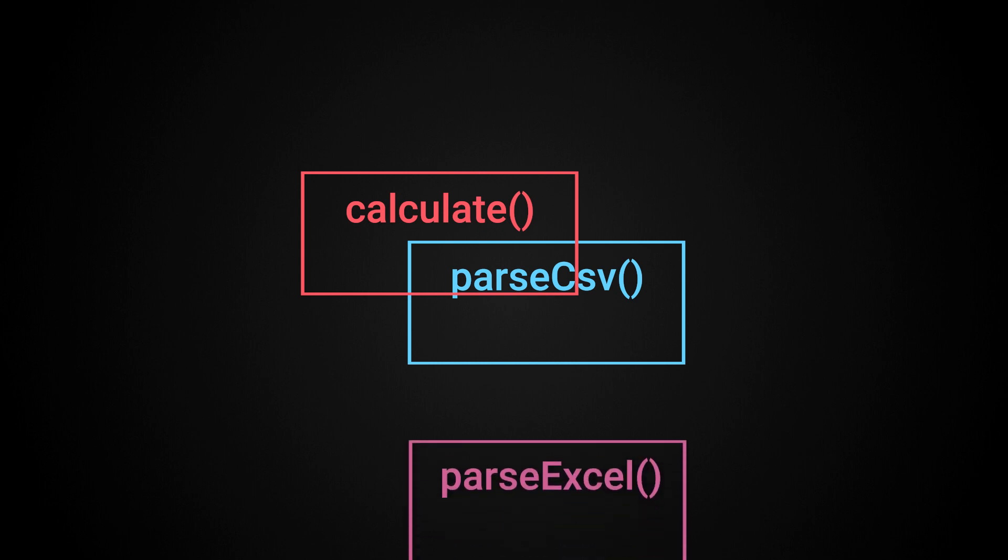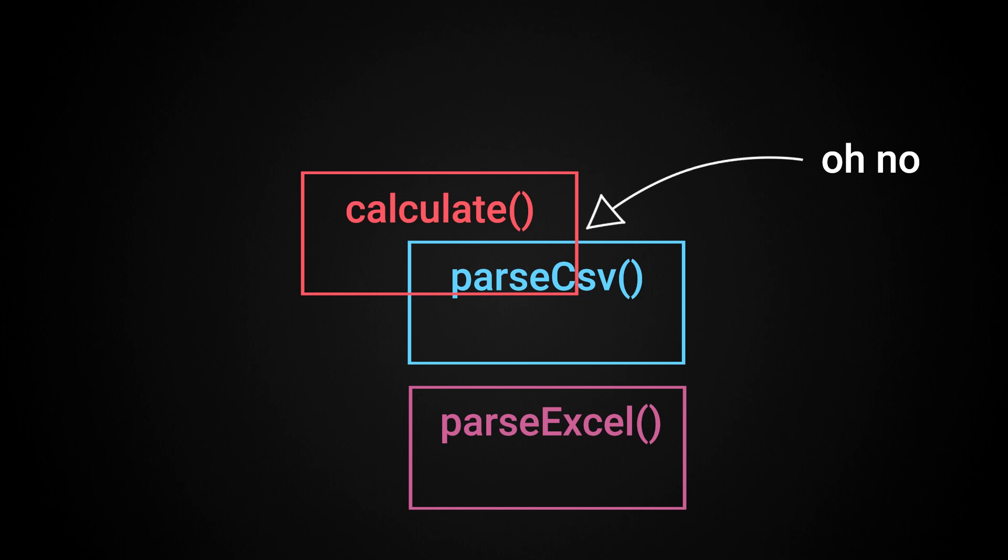If we wanted to change our system, say to read Excel files instead of CSV files, you can imagine having to trace how far the concept of a CSV file has permeated through the reporting code. If we wanted to make these pieces of logic loosely coupled, we would want to find a way to make the two pieces of logic more independent. There are a couple ways that we could do this.